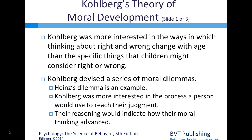The sick woman's husband, Heinz, went to everyone he knew to borrow money but could only get $1,000—half of what it would cost. He asked the druggist to sell it cheaper or let him pay later, but the druggist said no: 'I discovered the drug and I'm going to make money from it.' So Heinz got desperate and broke into the man's store to steal the drug for his wife. That is an example of a moral dilemma used by Kohlberg.